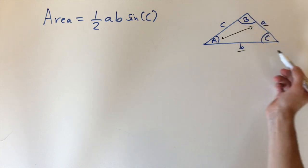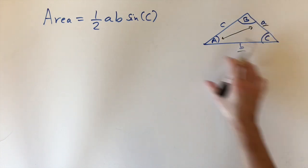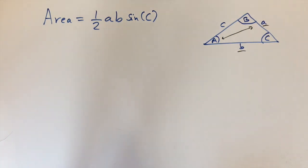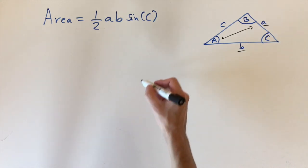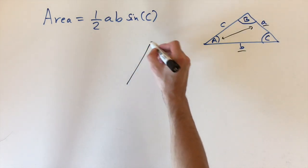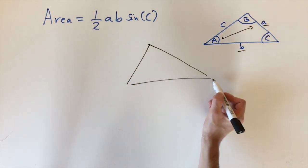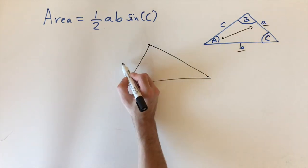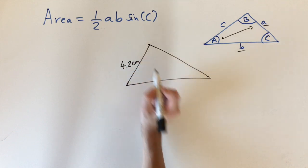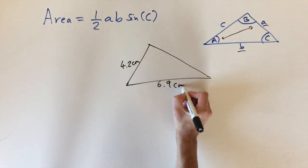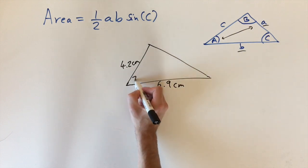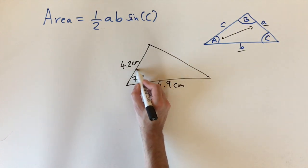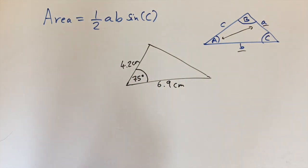C is the angle between lengths a and b, and this is all the information you need to work out the area of a triangle. In this video we're going to look at a couple of examples using this formula. Let's first look at a fairly simple example. If this length is 4.2 centimeters, this one is 6.9 centimeters, and this angle is 75 degrees, what's the area?